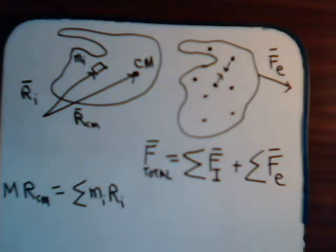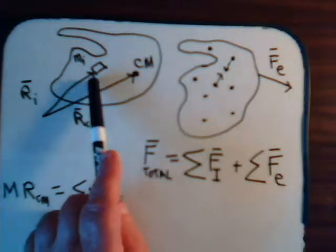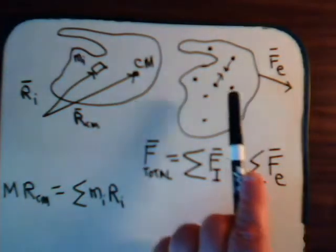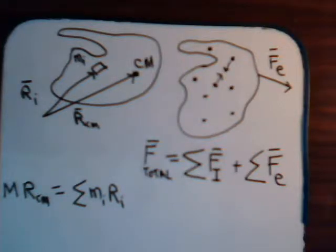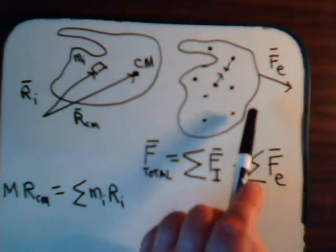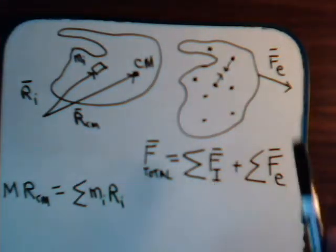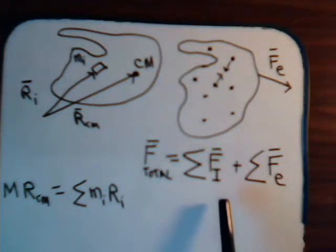For our object here, since it is comprised of discrete masses — at least we're artificially thinking of it in those terms — each one of these masses can subject a force on another one. It could be a gravitational force, it could be an attractive electrical force, or maybe a repulsive electrical force. But there are internal forces on this object, and then there could also be external forces. So the total forces that this object is subjected to is the sum of all the internal ones, plus whatever external forces might be acting on that object.